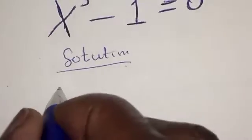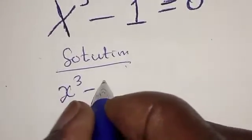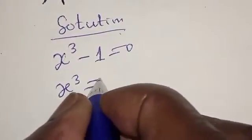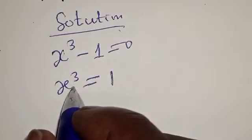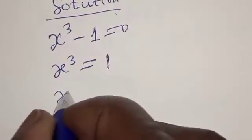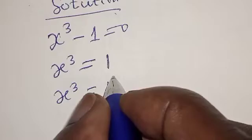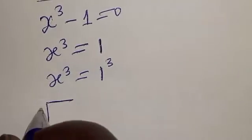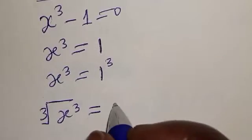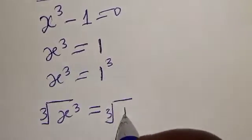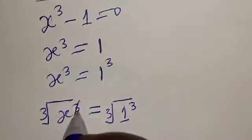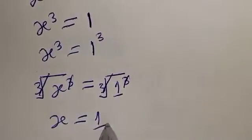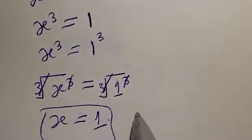We have s cubed minus 1 equal to 0, which means s cubed is equal to 1. Since 1 is the same as 1 cubed, we have s cubed equal to 1 cubed. Taking the cube root of both sides, the cube root of s³ equals the cube root of 1³, which gives us s is equal to 1.